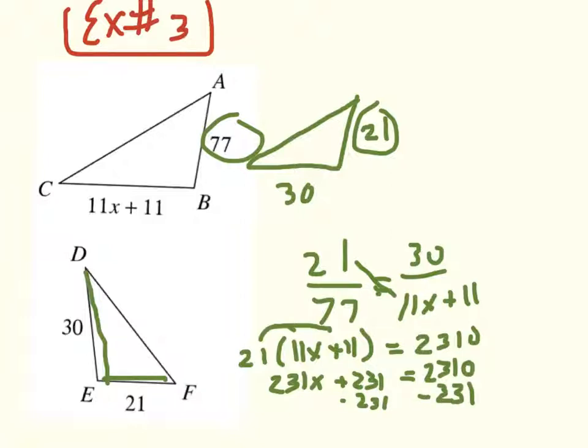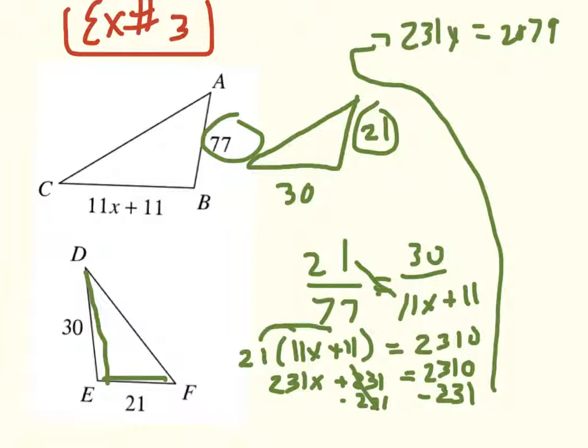And I go 231 times x equals 2,310 minus 231. And I get 231x equals 2,079. I'm going to go way up here now. 231x equals 2,079, this cancels. And divide the 2,079 by 231, and I get 9. So x is 9.